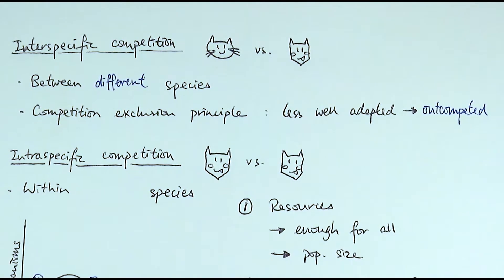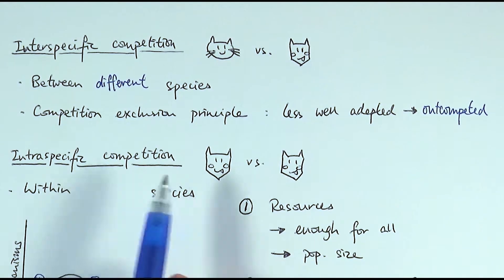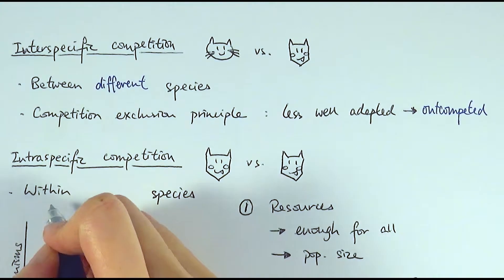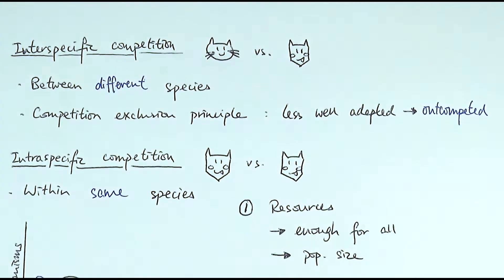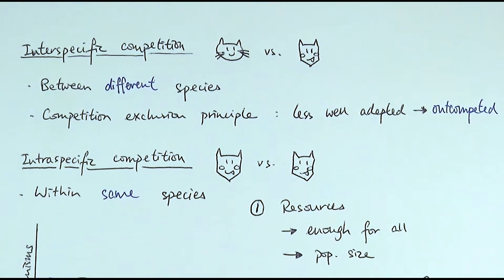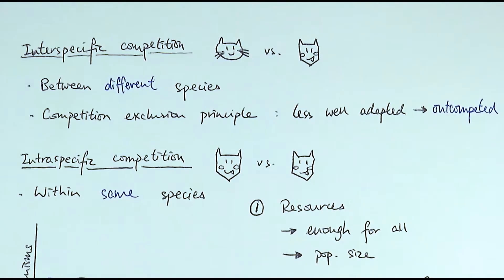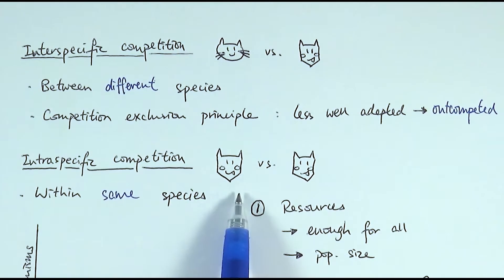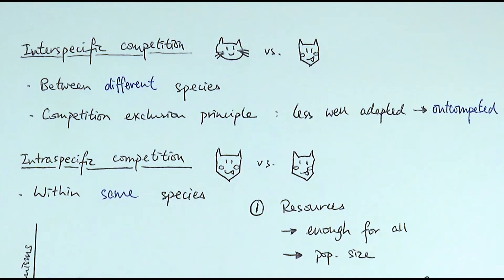On the other hand, we have intraspecific competition, which is competition between organisms within the same species. Think about the prefix 'intra' — like intranet or intra-school — referring to within the same place or population. For example, within the human population you compete with other people, or within a population of lions the lions compete with each other for food, mates, or a place to live.